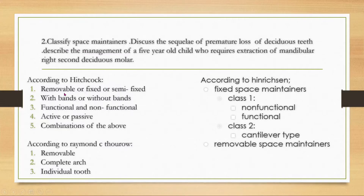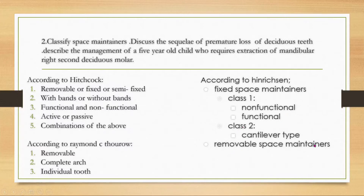For the classification of space maintainers, Hitchcock classified them as removable, fixed, or semi-fixed; with and without bands; functional and non-functional; active or passive; and combination. Raymond's classified them as removable, complete, and individual tooth. Hendrickson classified them as fixed space and removable space — in fixed space: class 1 and class 2; non-functional and functional in class 1 can be delivered in class 2.